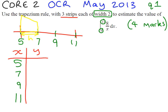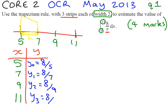Our formula for y is 8 over x. So the first y value, y0, is 8 over 5. The next one, y1, is 8 over 7. Then y2 is 8 over 9, and y3 is 8 over 11.